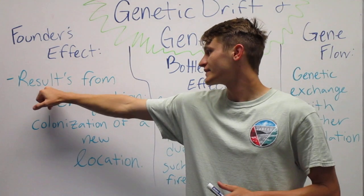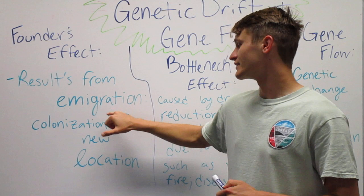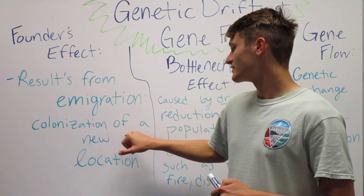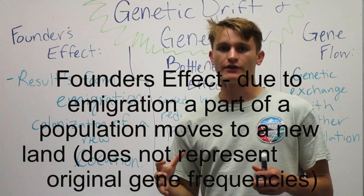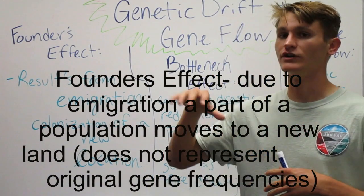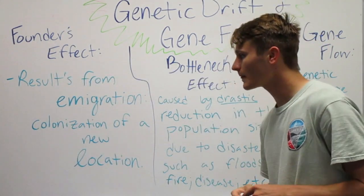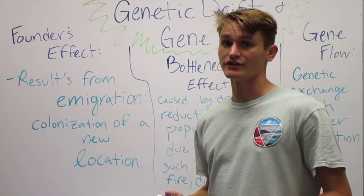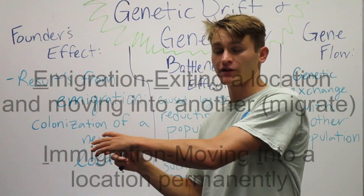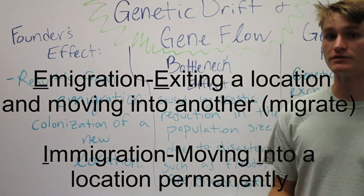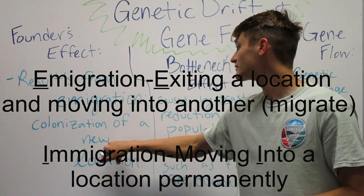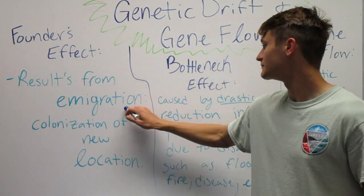The founder's effect results from emigration, which is a colonization of a new location. So it's whenever a group moves from one place to a new location. It's different from immigration. Immigration is when a group moves into a place that's already found. This is into a new location, so emigration. Keep that in mind.